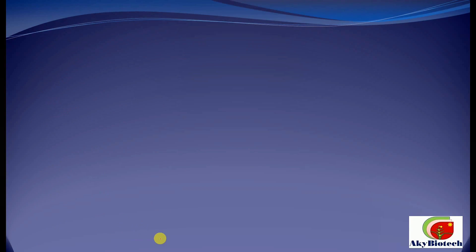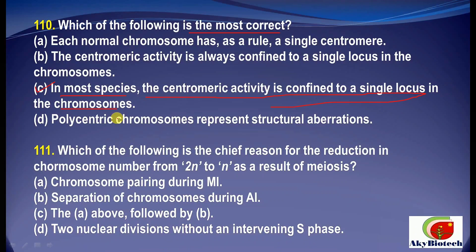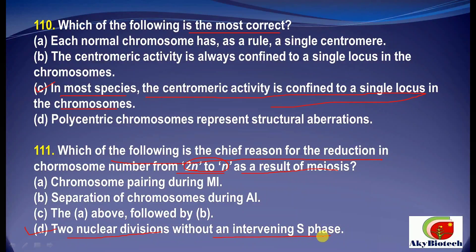Question 10: Which of the following is most correct? The correct option is C — in most species, the centromeric activity is confined to a single locus in the chromosomes. Question 11: Which of the following is the chief reason for the reduction in chromosome number from 2n to n as a result of meiosis? The correct option is two nuclear divisions without any intervening S phase.